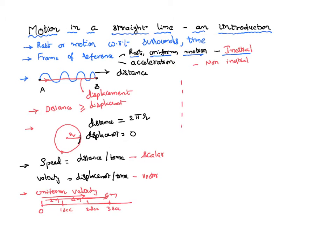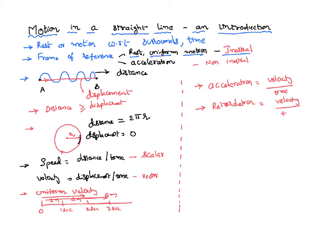If a body is in non-uniform velocity, its velocity is changing with respect to time. If that change is an increase with respect to time, that is called acceleration. So acceleration is the rate of change of velocity — velocity divided by time — where velocity is increasing with respect to time. If the velocity is decreasing with respect to time, that is called retardation, which is also an acceleration but with decreasing velocity.